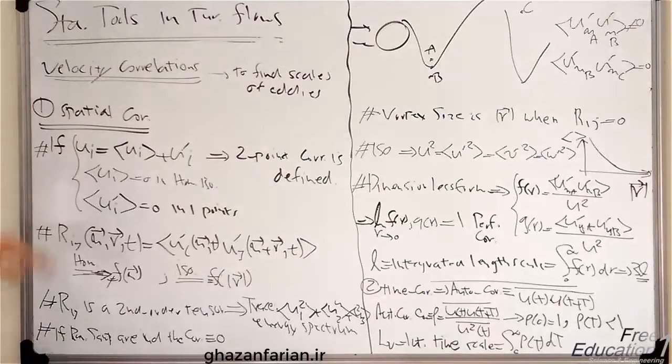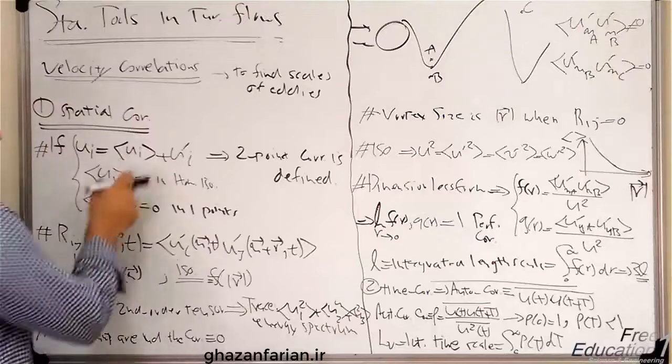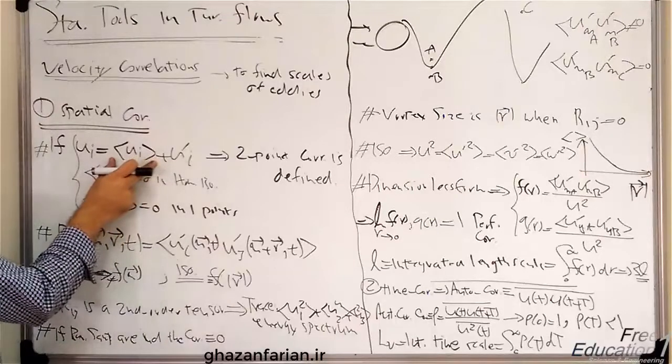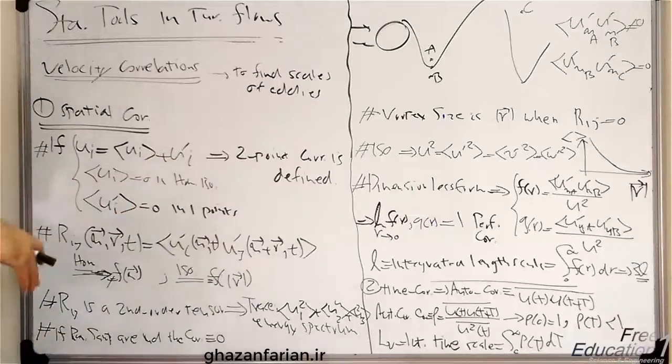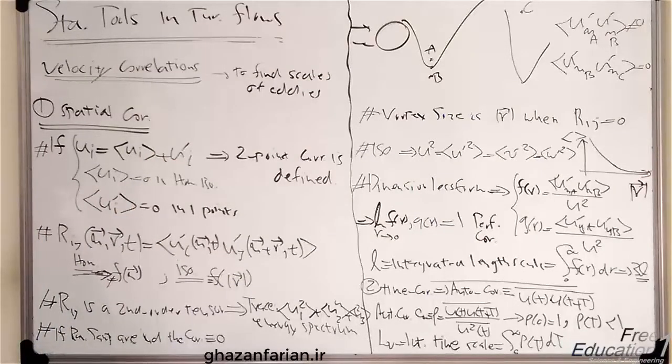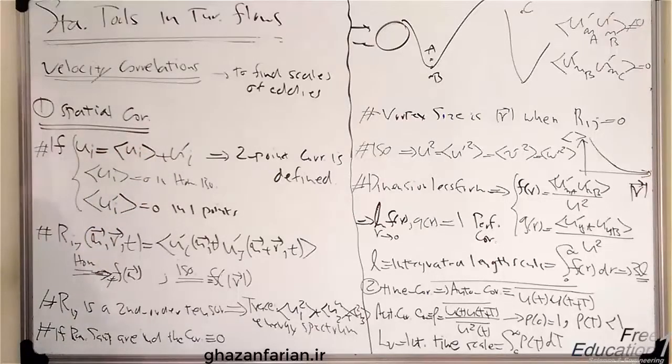Let's start from the first one. Consider that the velocity, the i-th component of velocity, can be decomposed into the ensemble average or the mean flow, and the fluctuation about that mean. So this is the fluctuation of the velocity, and this is the mean velocity, or the ensemble velocity.